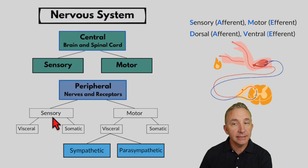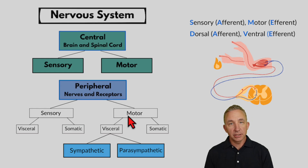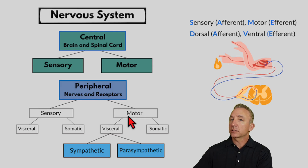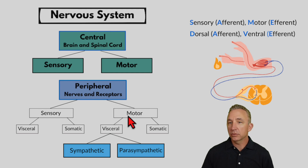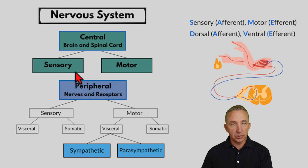We sense things, and then we have a motor function — which is the reaction, usually to a muscle or a gland. That's where we build from our skeletal muscles to the nervous system: how do we communicate with these muscles? We take sensory and motor to talk to the sensory and motor of the brain and spinal cord.